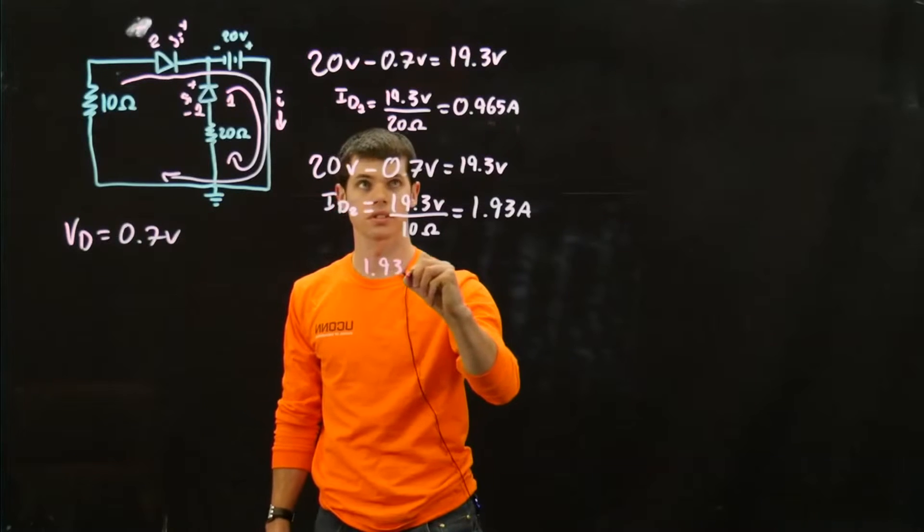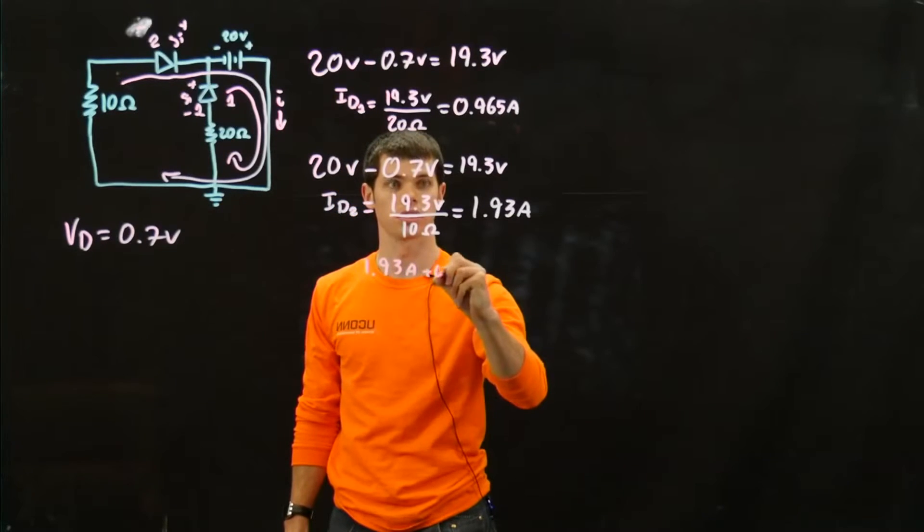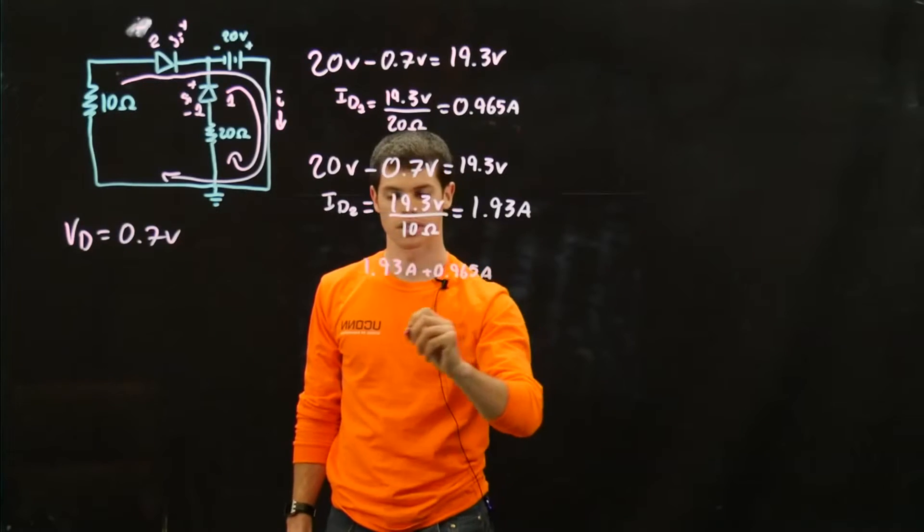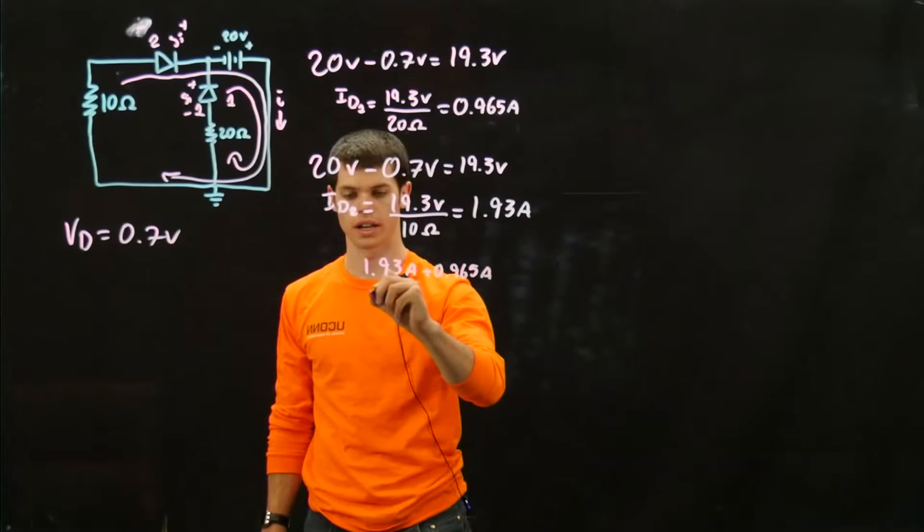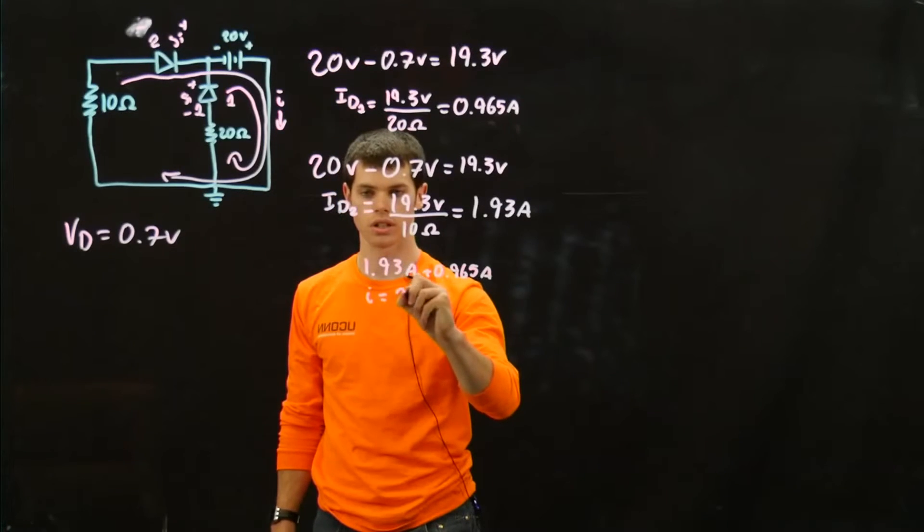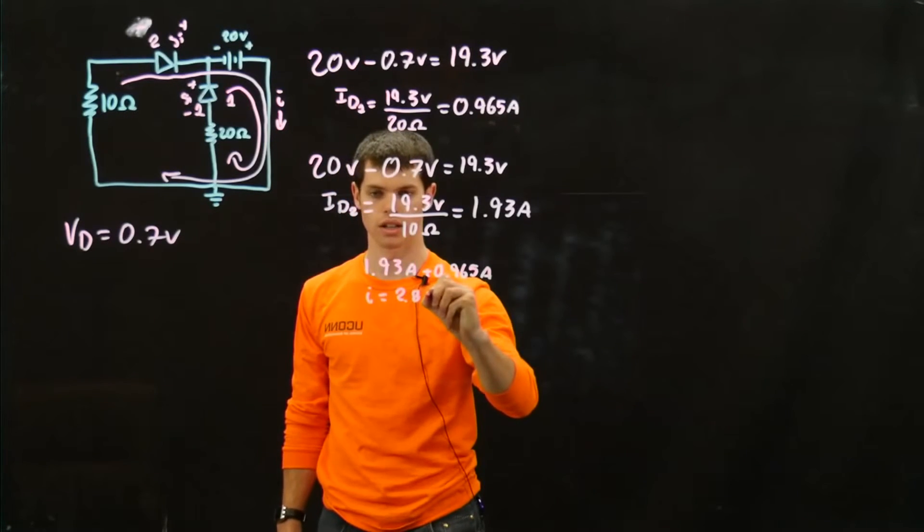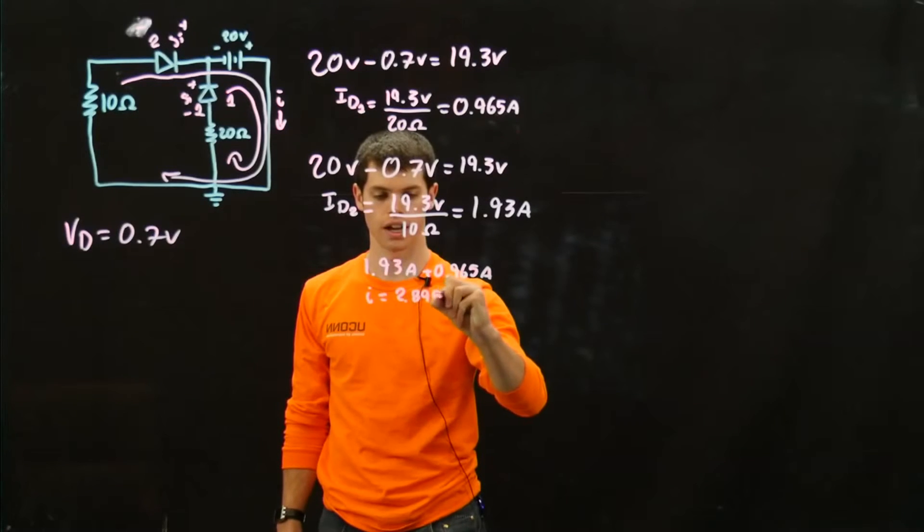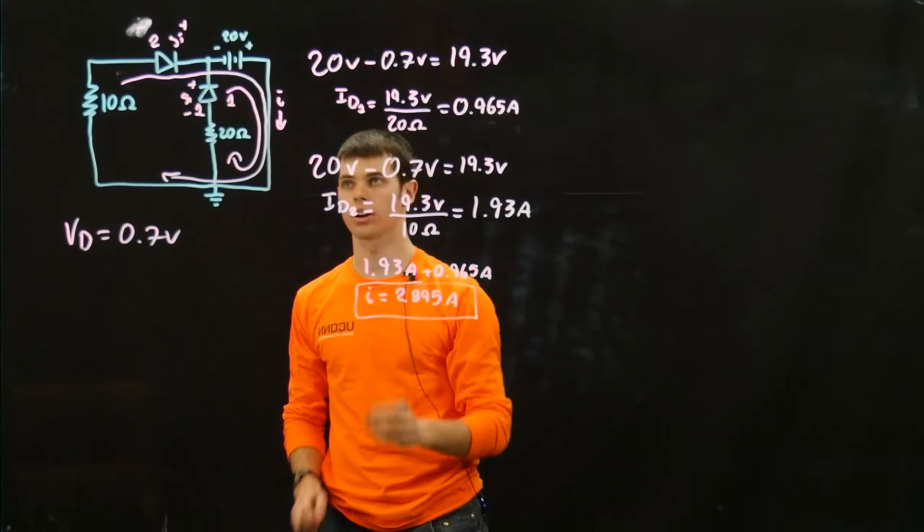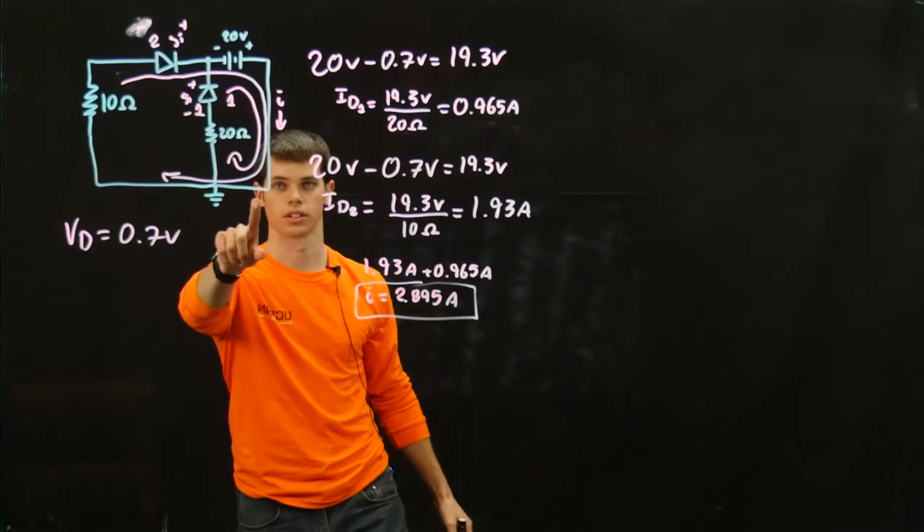1.93 amps plus 0.965 amps. And that's going to equal out to a current equal to 2.895 amps. And that's going to be our total current going through this particular wire on the circuit.